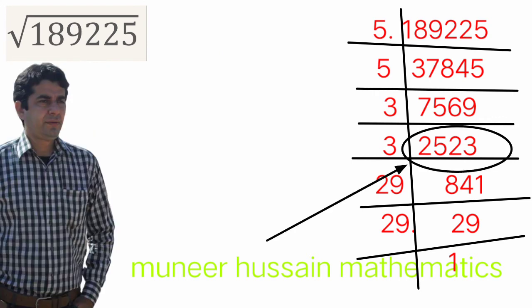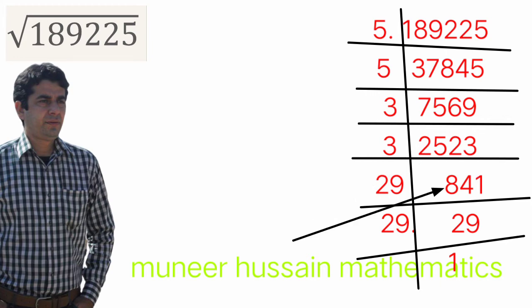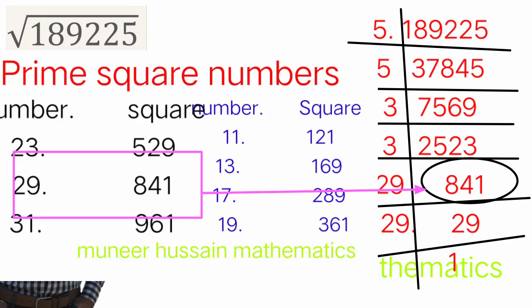Dividing 7569 by 3: 3 into 7 is 2 remainder 1, carry 15; 3 into 15 is 5; 3 into 6 is 2; 3 into 9 is 3 — giving 2523. Dividing 2523 by 3 again: 3 into 24 is 8 remainder 0, carry; 3 into 12 is 4; 3 into 3 is 1 — giving 841.